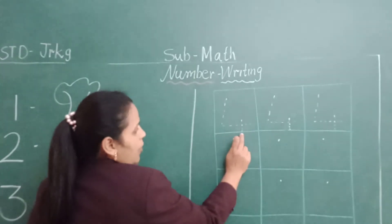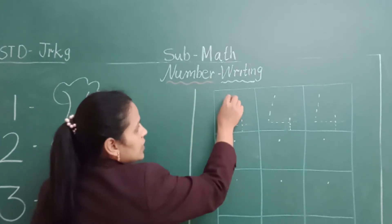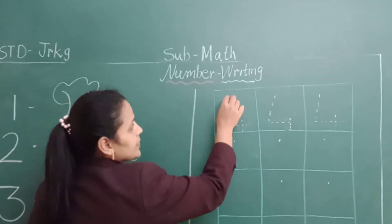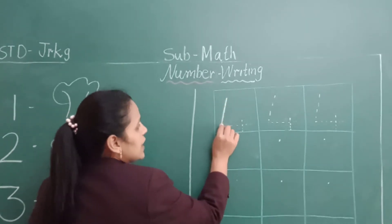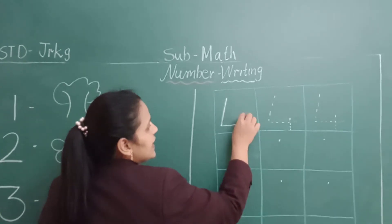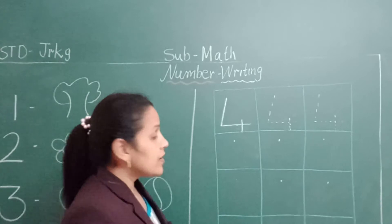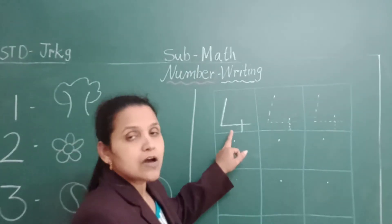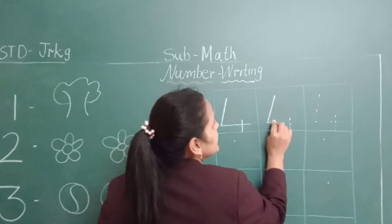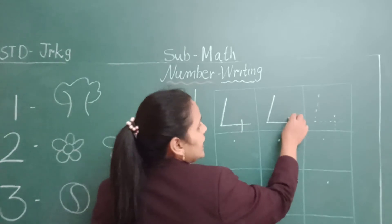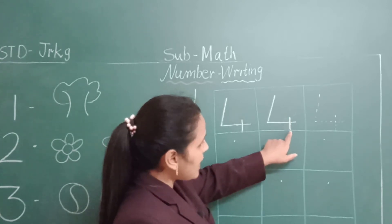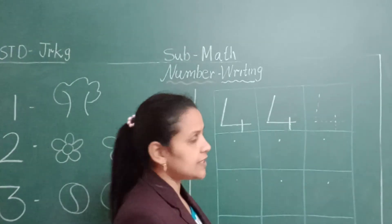We are going to learn number 4. Upar se niche slant line — after that, slipping line, slant line, slipping line and standing line. Yeh ban gaya four. Dekho, yeh standing line jo hai wo small li hai, aur jo standing line yaha pa touch ki hai — toh aapko bhi yeh blue line ko touch karna hai. Understood?